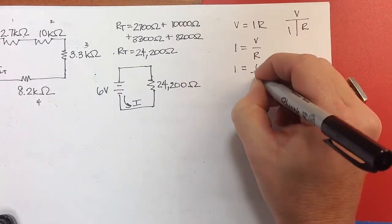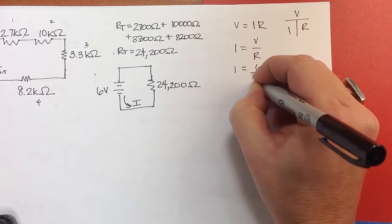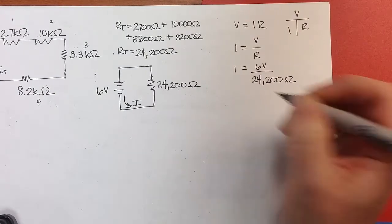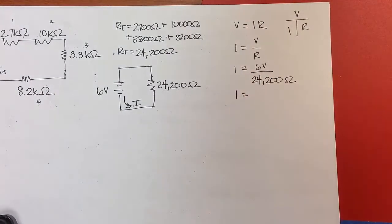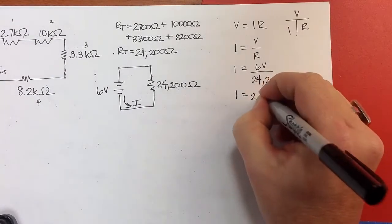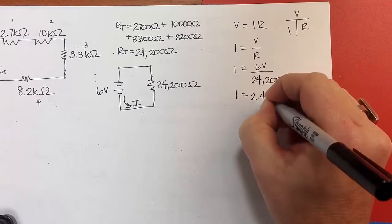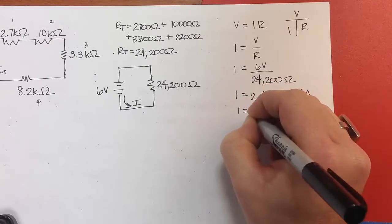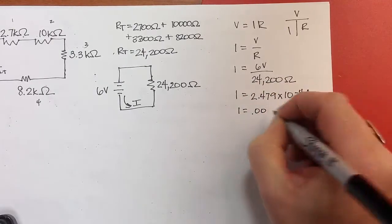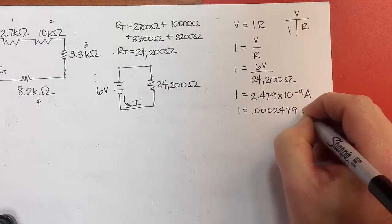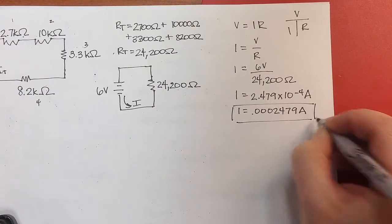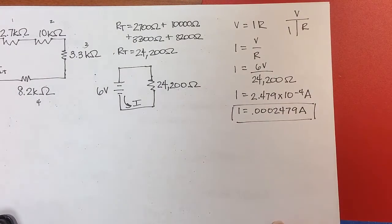You can see that that is going to be a very small I, and I get 6 divided by 2.479 times 10 to the minus 4 amps. That's equal to 0.002479 amps. That's really 0.2 milliamps. It's a very small current.